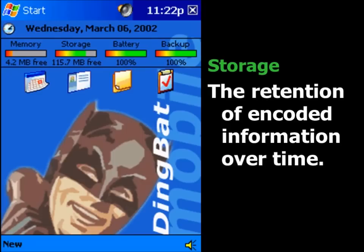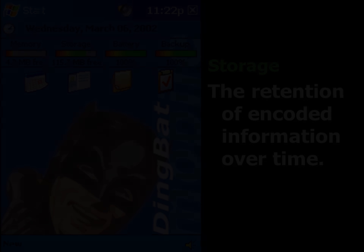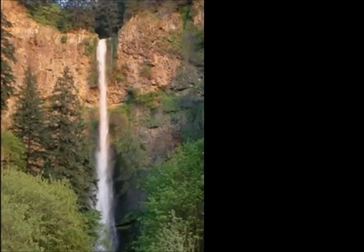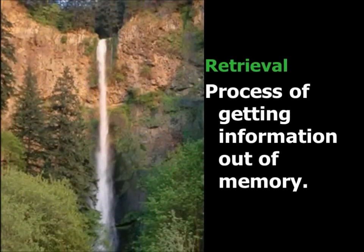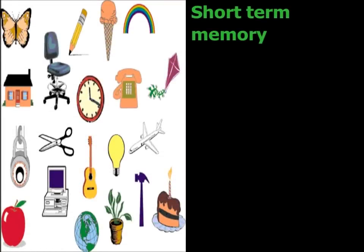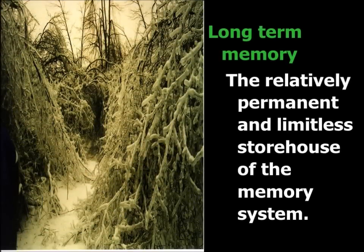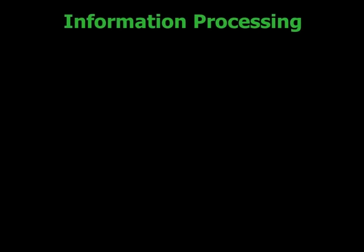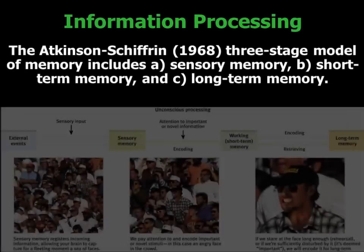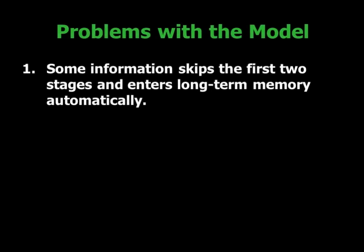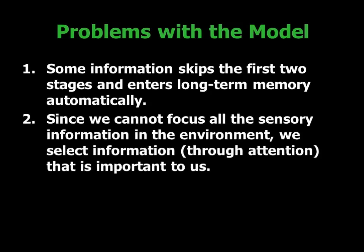Basically, know the structure of memory — the idea of working memory or short-term memory, long-term memory, the encoding from short to long-term, and the process of retrieval. Know those factors on a structural basis and what they individually mean. One of the key things is encoding — some of that we do automatically, some takes effort.